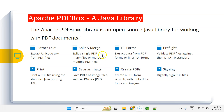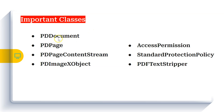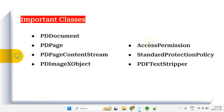Let's talk about the important classes we're going to use in this demo. First is PDDocument, which we'll use to create the PDF document. Then PDPage, used to create PDF pages. Next is PDPageContentStream, a very important class used to write content to the PDF. PDImageXObject is used to insert images into the PDF. AccessPermission and StandardProtectionPolicy are used to secure our PDF by setting permissions like read-only or print-only, and setting a password. Finally, PDFTextStripper allows you to read text content from the PDF.